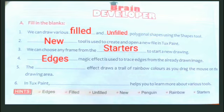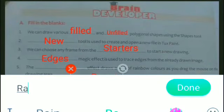The fifth question is: the dash effect draws a trail of rainbow colors as you drag the mouse on the drawing area. Which effect gives a trail of rainbow colors? The right answer is 'rainbow'. So here we will write 'rainbow'.